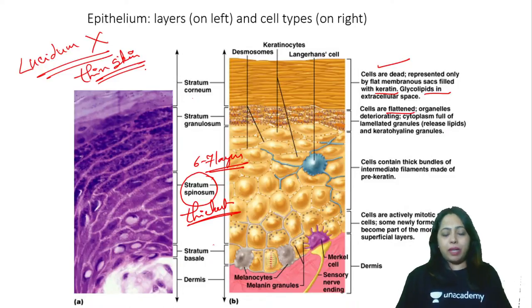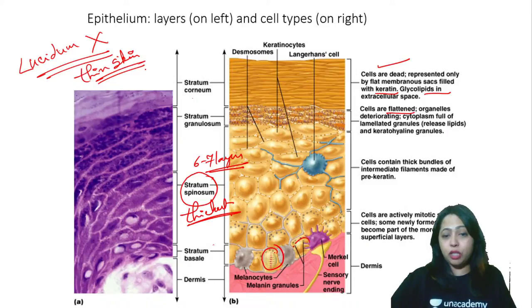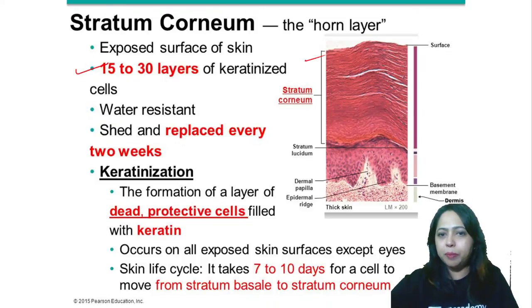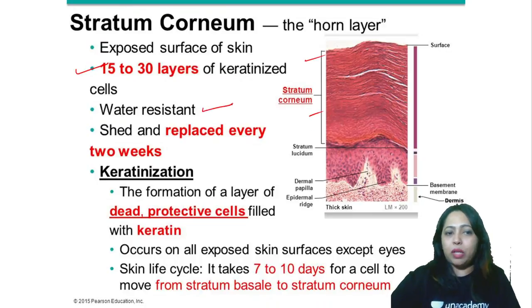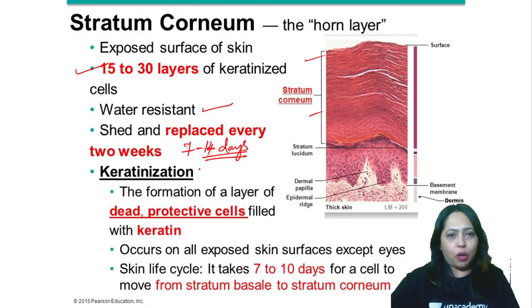You can also see many mitotic divisions happening in the basale, with cells at different stages of division. The corneum is about 15 to 30 layers thick, is water resistant, and sheds every seven to fourteen days — you get a new skin. The new cells are pushed to the topmost layer within seven to fourteen days, then keratinization occurs — formation of a dead, protective layer filled with keratin material.